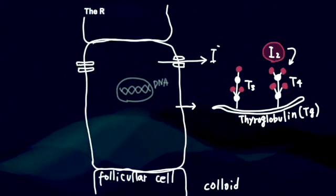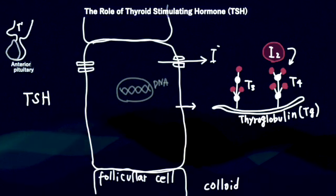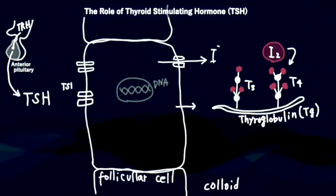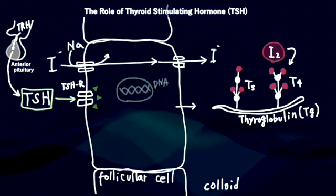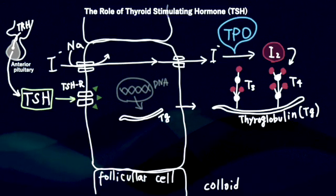Now, let's understand the role of thyroid-stimulating hormone, TSH. TSH is released from thyrotrophin cells in the anterior pituitary into the blood and binds to the thyroid-releasing hormone receptor. Its activation leads to iodide uptake, synthesis of thyroglobulin, and iodination of thyroglobulin.